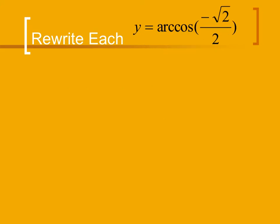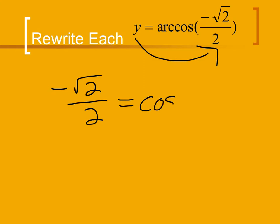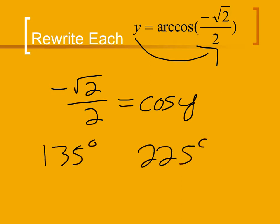Let's look at the arc cosine. We do the same thing — switch y with our value, and we lose the arc component, giving us negative square root of 2 over 2 equal to the cosine of y. We figure out where the cosine equals negative radical 2 over 2. This happens at 135 degrees and again at 225 degrees. 135 is in the second quadrant, 225 is in the third quadrant, and our answers have to be in either the first or second quadrant. So we reject 225 and accept 135 as the answer.